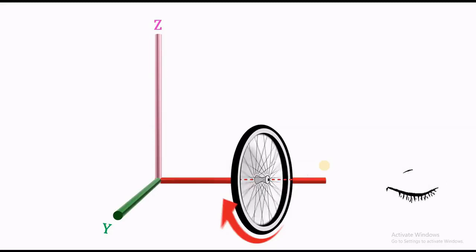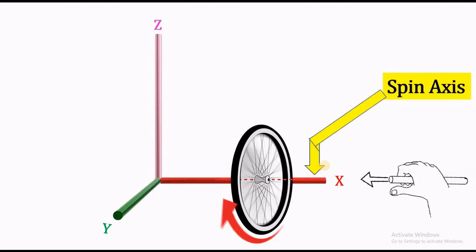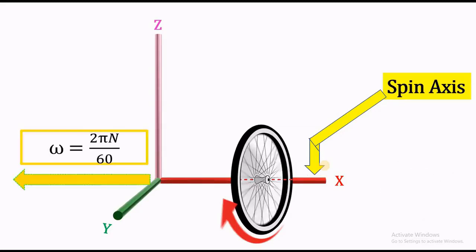If the same is viewed from the rear side, the disk appears to rotate in counter-clockwise direction. Applying right hand thumb rule, the angular velocity vector is pointing in the negative x direction, the magnitude of which is given by 2πn by 60.